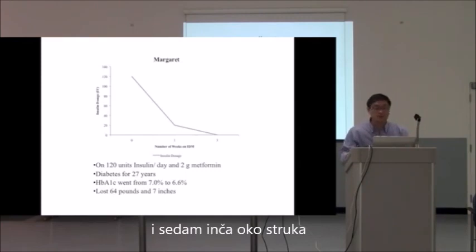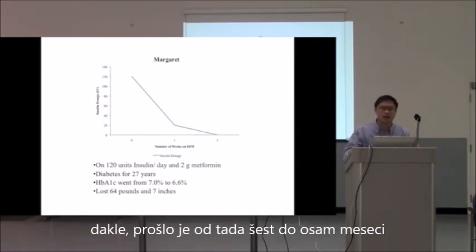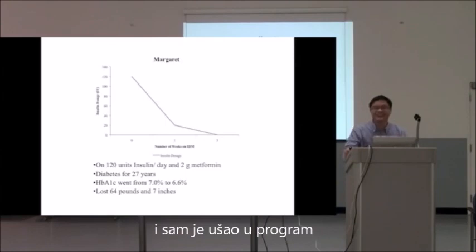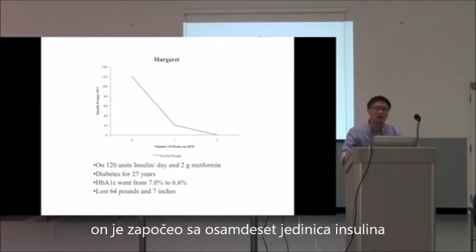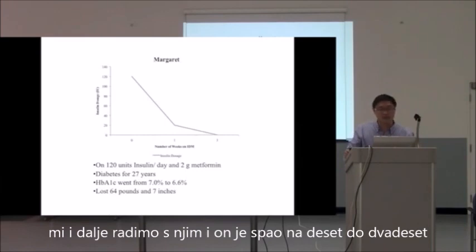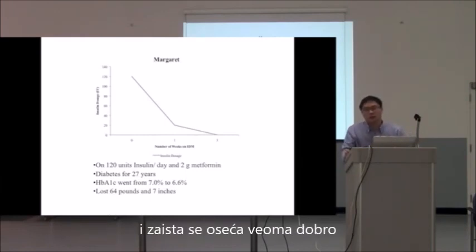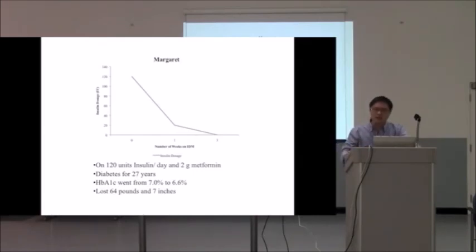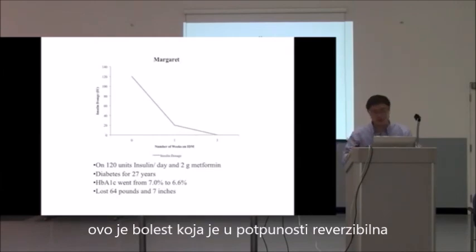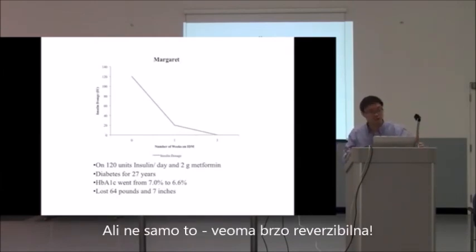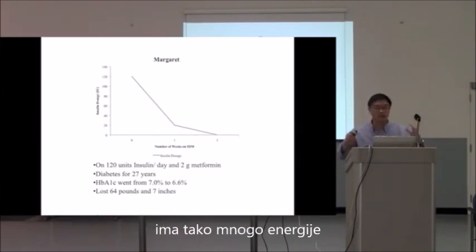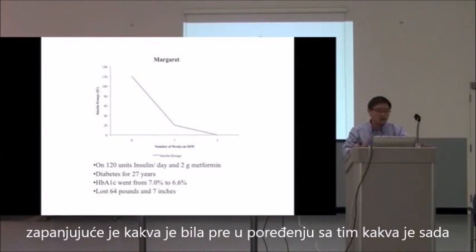Seven inches came off her waist. It's been about six to eight months now, and her husband, who is also here, saw her doing so well that he started the program as well. He started on 80 units of insulin and we're still working with him — he's down to about 10 to 20 units and feeling very good. What this demonstrates is that this is not a chronic and progressive disease; it's completely and very quickly reversible.